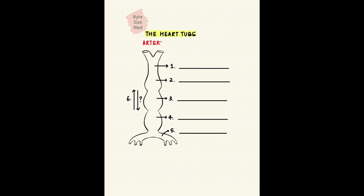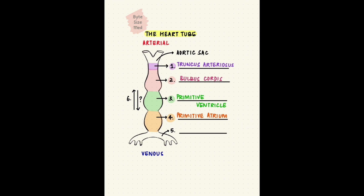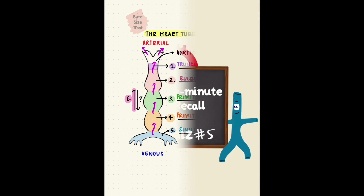The heart tube has a cranial end, which is the arterial end, and a caudal end, which is venous. From above down, we have the truncus arteriosus, which is the distal third of the bulbus cordis. It leads into the aortic sac and the aortic root. Then we have the primitive ventricle, the primitive atrium, and the sinus venosus with its right and left horns. Blood enters through the sinus venosus, goes through the primitive atrium, the primitive ventricle, the bulbus cordis, the truncus arteriosus, and gets pumped out through the arterial end.